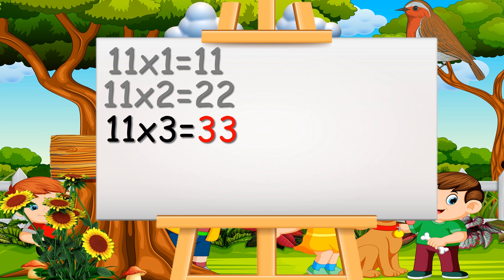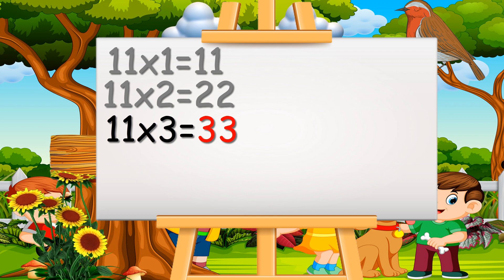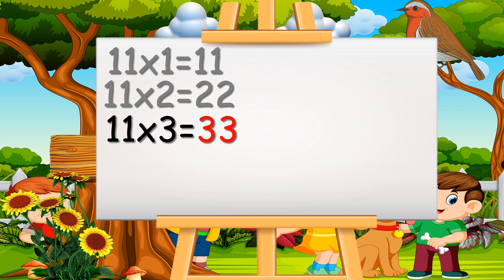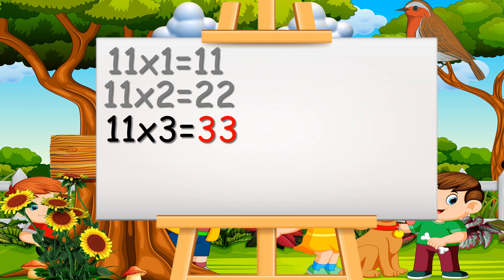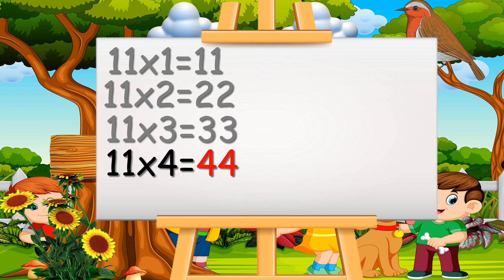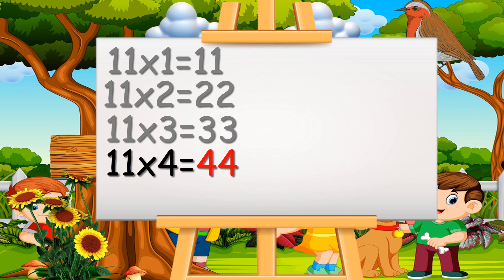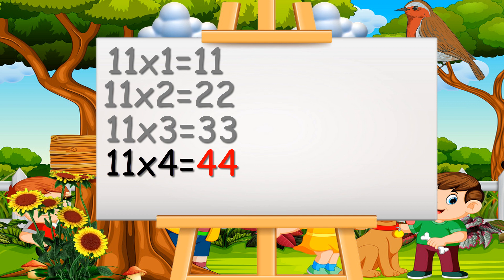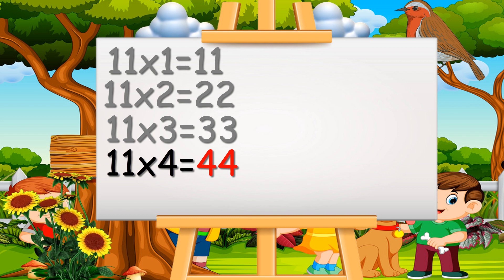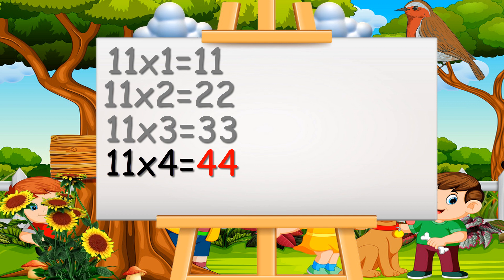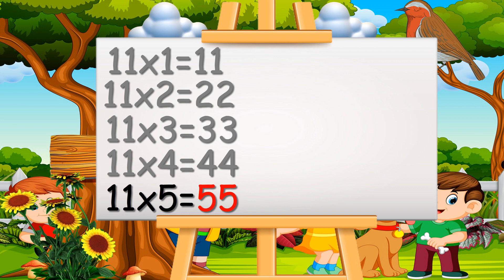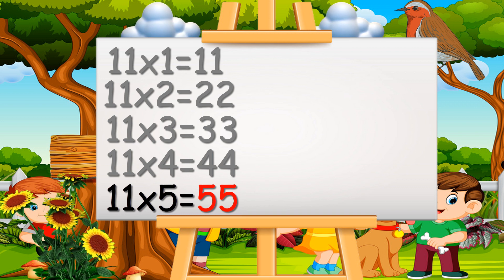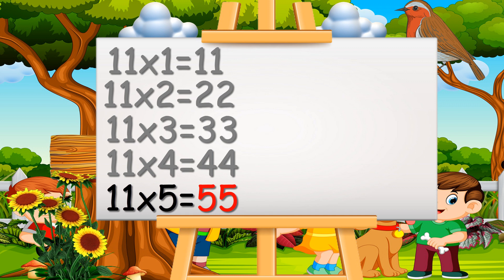Eleven ones are eleven. Eleven twos are twenty-two. Eleven threes are thirty-three. Eleven fours are forty-four. Eleven fives are fifty-five.